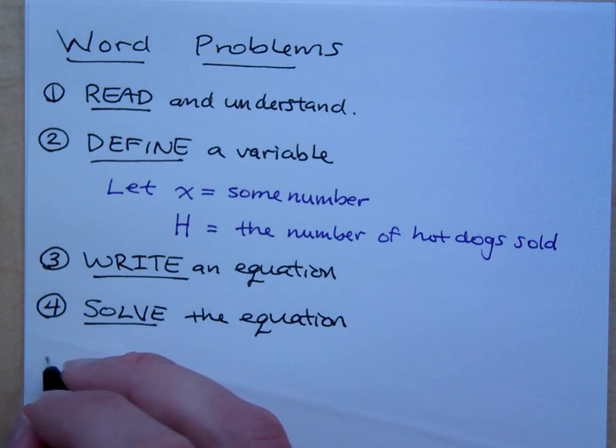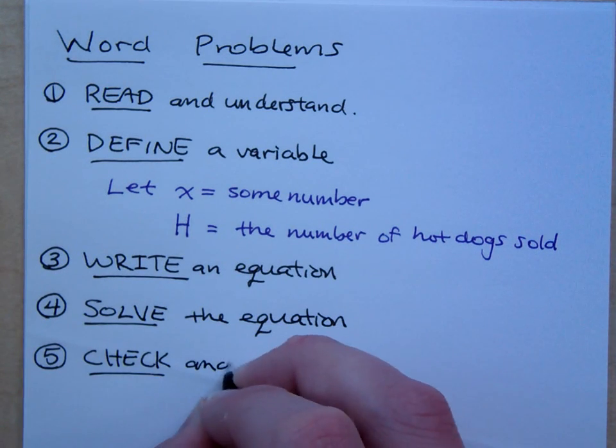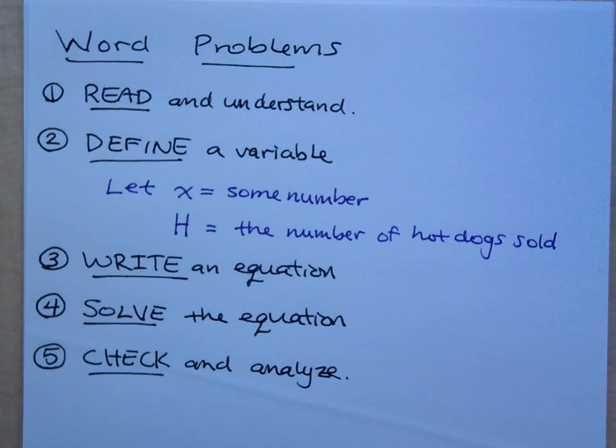After you've solved the equation, before you go on, you need to make sure that you check and analyze your answer. So check and analyze. Again, does your answer make sense? Is this an appropriate value for the cost of a hot dog? Does this make sense that there were so many students in a class? You know, does Mr. Smith really have 19.25 students in his class? Probably not. He made a mistake somewhere. Figure it out.